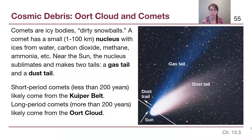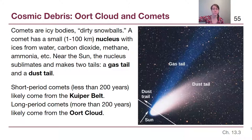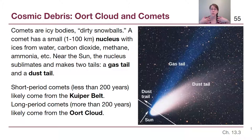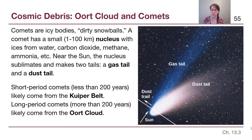One really important thing to understand is that those tails are not behind the comet. Instead, those tails point away from the Sun. The reason they develop is that gas is created as the comet warms up, and then the solar wind causes those atoms and molecules to speed up and move away with the solar wind.